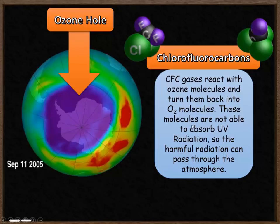These molecules don't absorb UV radiation, so the harmful radiation can pass through the atmosphere and reach the surface of the earth. There are currently two large areas of very little ozone in the earth.